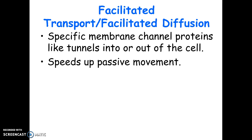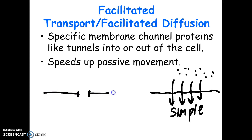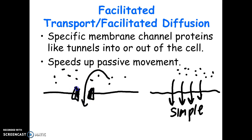Think of an open field where everybody goes from where there's more to where there's less — that would be like simple diffusion. If you think of a wall with an open gate, and everybody that hits the right spot gets to pass through, that would be like facilitated diffusion. It's still moving things from higher to lower concentrations, but instead of passing directly through the phospholipid bilayer, it requires a protein channel or carrier.